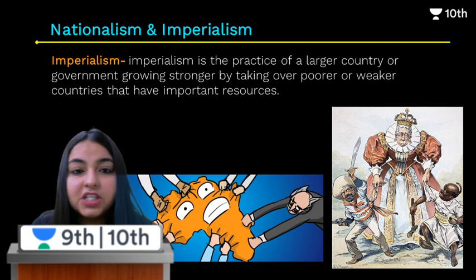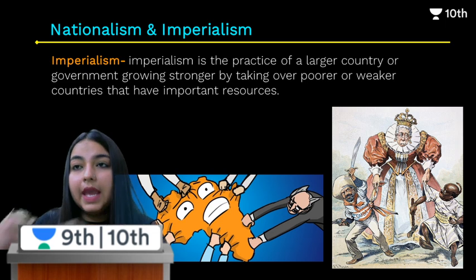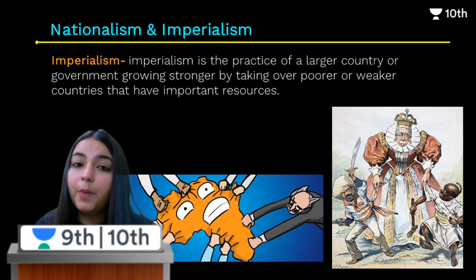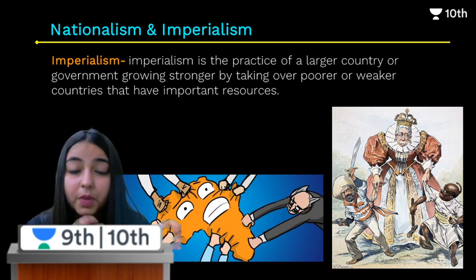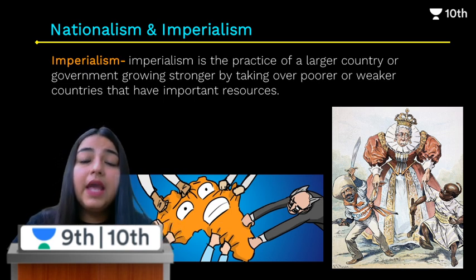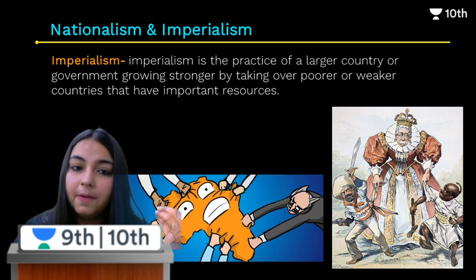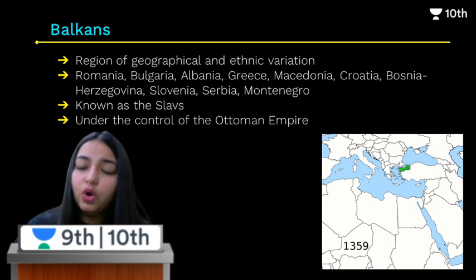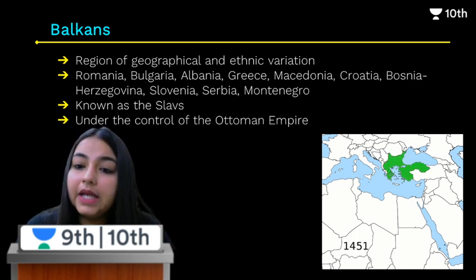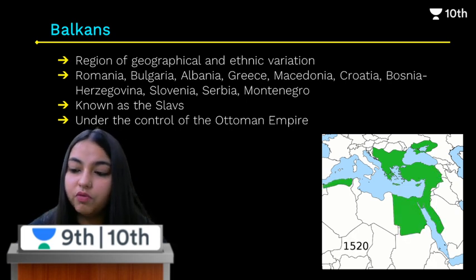Moving on, understand what imperialism is. Imperialism is basically a practice where one particular power wants to control another part or country — wanting to extend its area and power over weaker countries. By the end of the 19th century, the idea of nationalism was slowly moving towards imperialism, as European powers tried to manipulate people and move them towards the idea of imperialism.